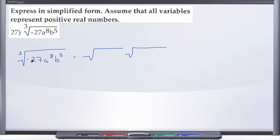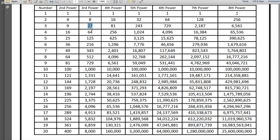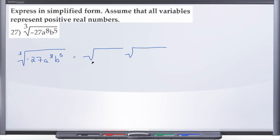We'll deal with the even index case a little bit later on, but for right now just know that we cannot have a negative under the radical with an even index. Here we have an odd index, and 27 is in fact a perfect cube, so we're going to take all of the negative 27 and put it under our good stuff radical.